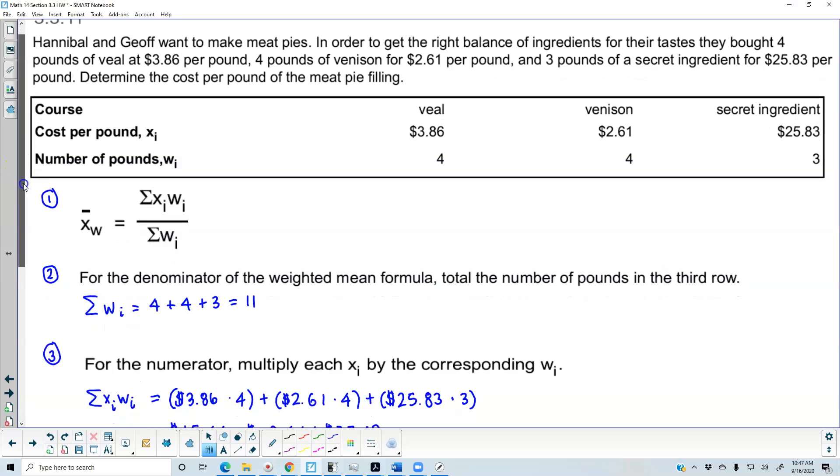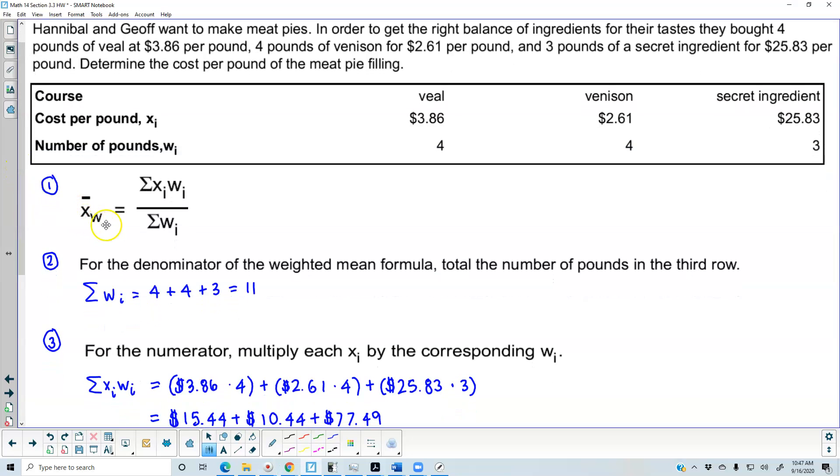What we want to do is find the weighted mean. The formula is the sum of x_i times w_i over the sum of w_i.